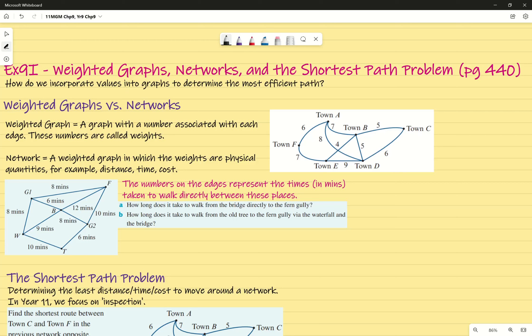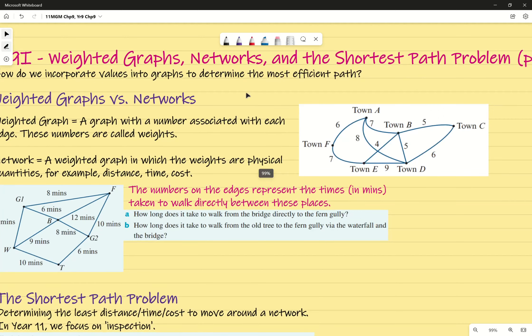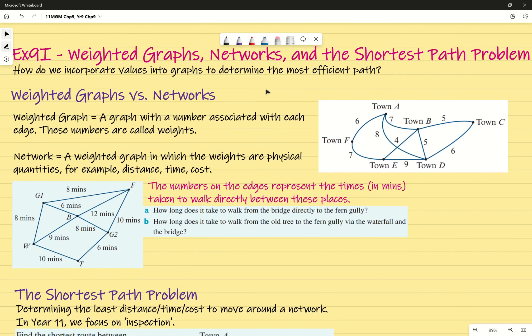I've been mentioning this over the last couple of lessons so that we should be generally aware of the scenario. We can assign values to individual edges in order to provide an idea of how we can look for the most efficient pathway. In this circumstance there's two words that we need to define - weighted graphs and networks.